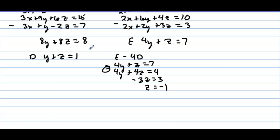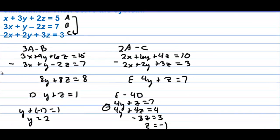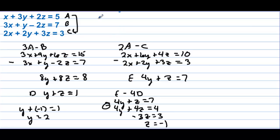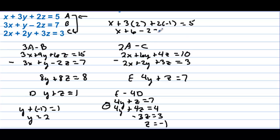So z = −1. Now plug −1 back in for z. We have y + (−1) = 1, so y = 2. Then go back to equation A and plug in z = −1 and y = 2: x + 3(2) + 2(−1) = 5, so x + 6 − 2 = 5, x + 4 = 5, so x = 1. The solution is (1, 2, −1).